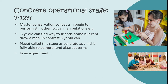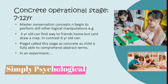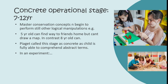In one test for formal operational thinking, a subject tries to discover what determines the amount of time a pendulum swings back and forth — this is called the period of oscillation. The subject is presented with a length of string suspended from a hook and several weights, and can alter them as desired. Children still in the concrete operational stage will experiment by changing some variables, but not in a systematic way.